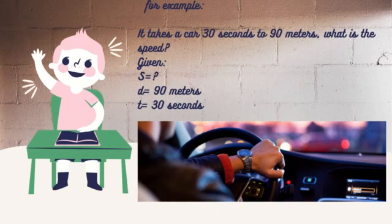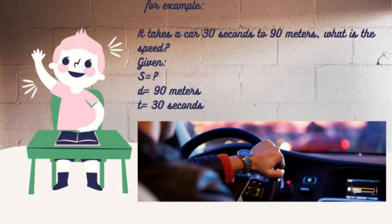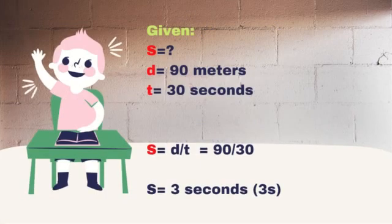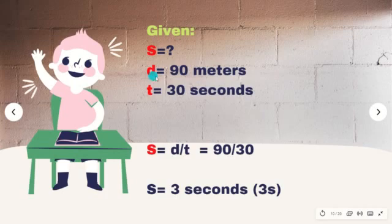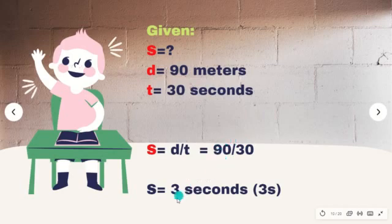It takes a car 30 seconds to travel 90 meters. What is the speed? Here are the given values. We need to find the speed. Distance (d) = 90 meters, time (t) = 30 seconds. To solve this, we follow the formula: S = d/t, or 90 divided by 30. So, 90 divided by 30 equals 3 meters per second.